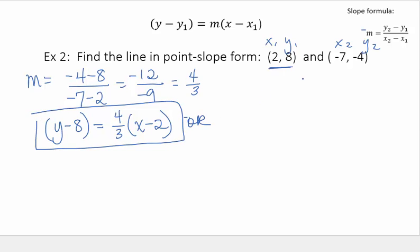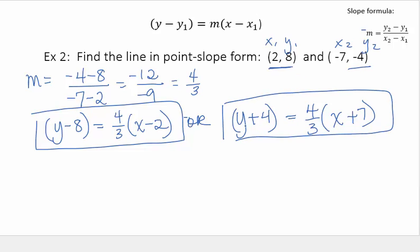The other one using this point. Y minus the y, which was negative. So minus the negative means plus 4. Equals 4 thirds. X minus negative 7 means plus 7. So again, depending on which point you use for your point-slope form, you may have one of these two answers, and both are correct. You don't have to find both, but you've got to find one of the two.